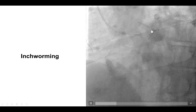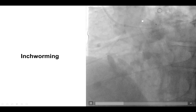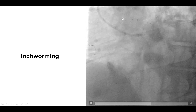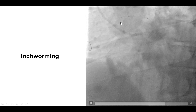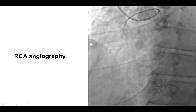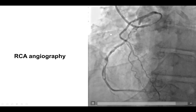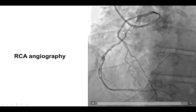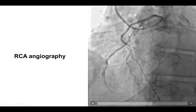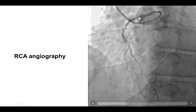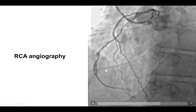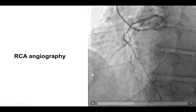To advance the guide extension further, we used the inch-worming technique with a small balloon being inflated, then deflated, which helped advance the guide extension further into the right coronary artery. Here is an angiogram through the guide extension — we are indeed in the acute marginal branch, but we can now visualize the right coronary artery and see the significant lesions in the proximal as well as the mid portion of the vessel.